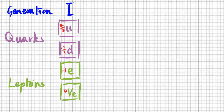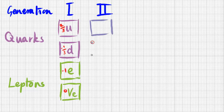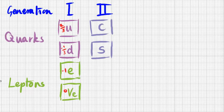Then came the discovery of the second generation of matter. Every particle in the first generation has a symmetrical partner particle in the second generation. They invented names for them: this is the charm quark and the strange quark. The strange particle was discovered first — when they found it, they said 'what's this strange particle?' — hence the name. They were perplexed until they found its symmetrical partner and thought 'that is charming.'